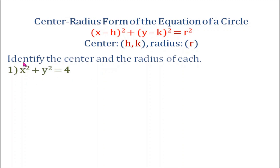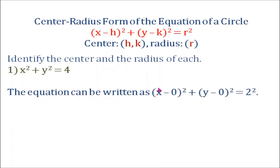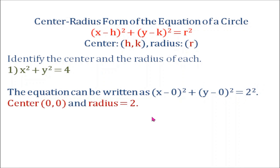Example number one: identify the center and the radius of x squared plus y squared equals 4. This equation can be written as the quantity x minus 0 squared plus the quantity y minus 0 squared equals 2 squared, since 4 can be written as 2 squared. The coordinates of our center are h and k: 0 and 0, and the radius is 2.